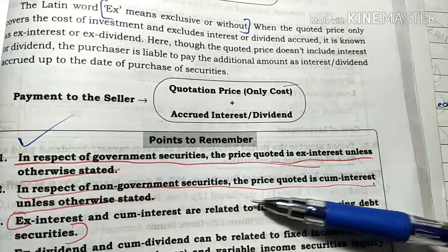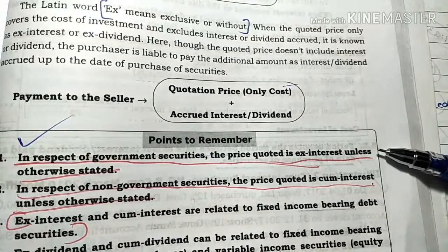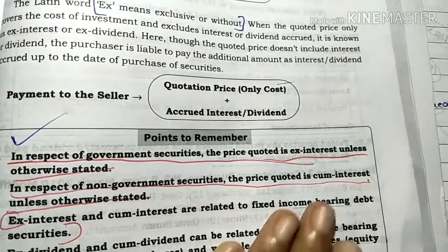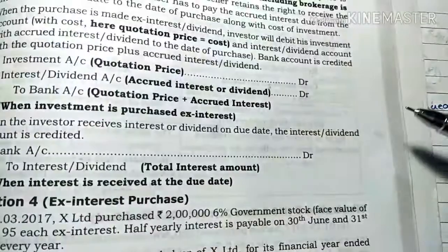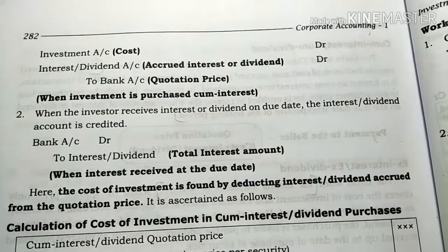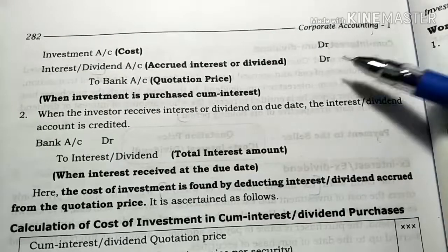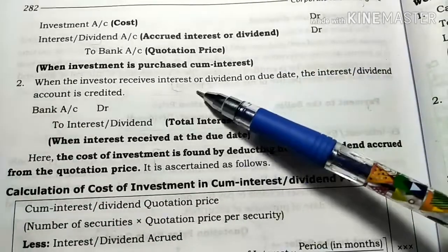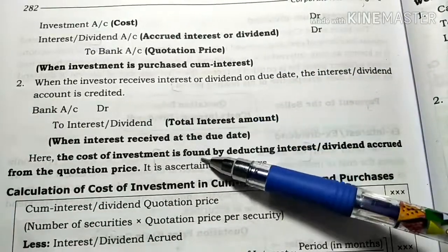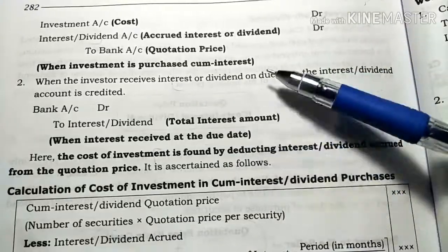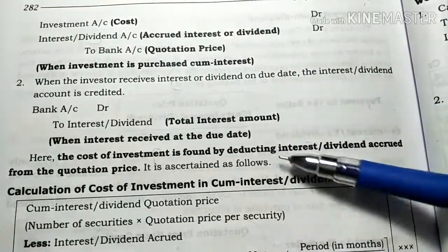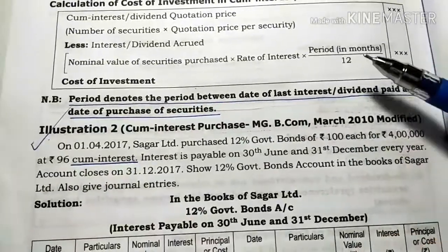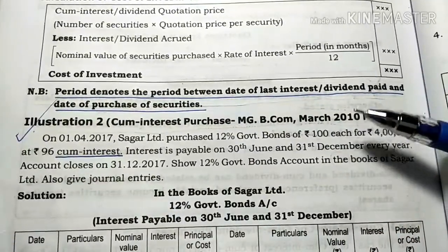We have not done this in the video for government securities. We have problems with government securities. We have the entry to the investment account debtor and interest account debtor to bank. We have the interest to the bank account debtor to interest. We have to ask questions about this.